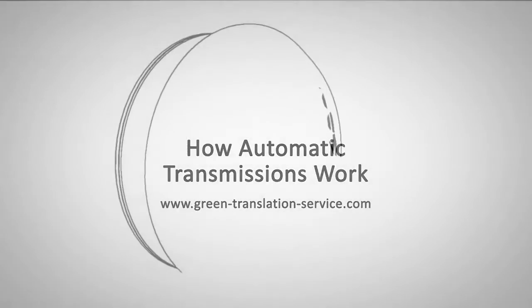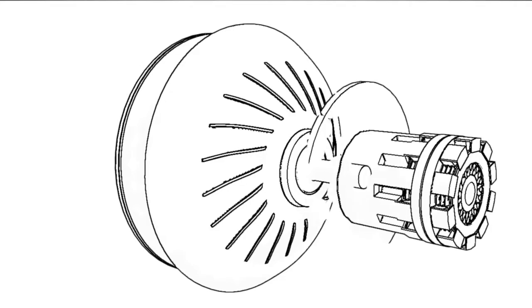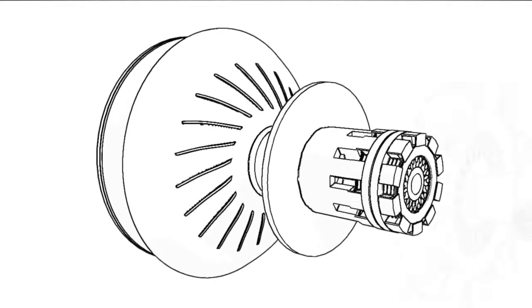Today, automatic transmissions are composed of a torque converter and several multi-plate clutches, multi-plate brakes and band brakes.